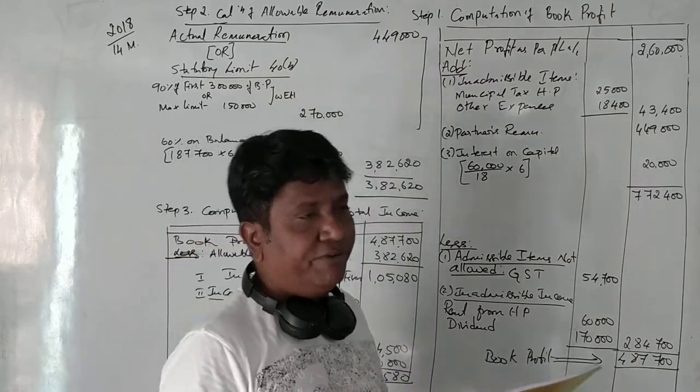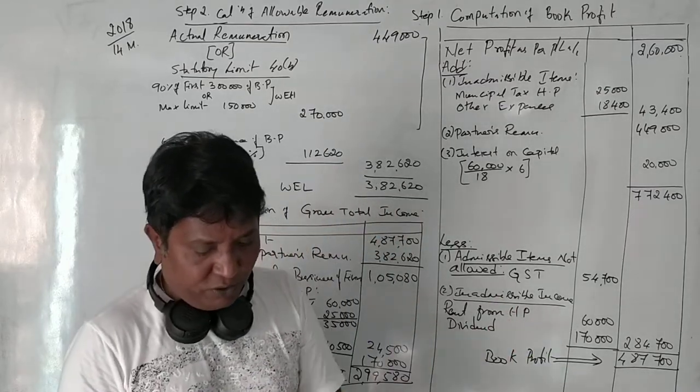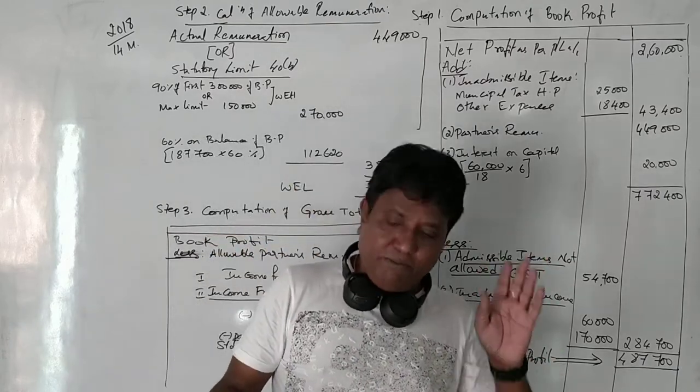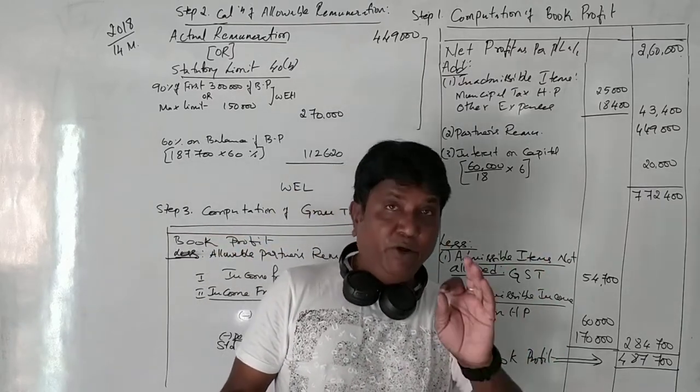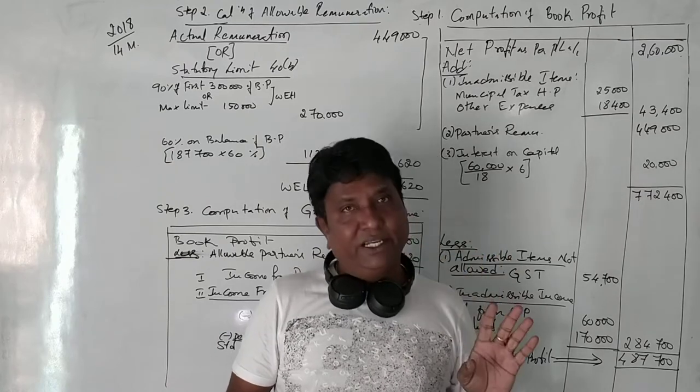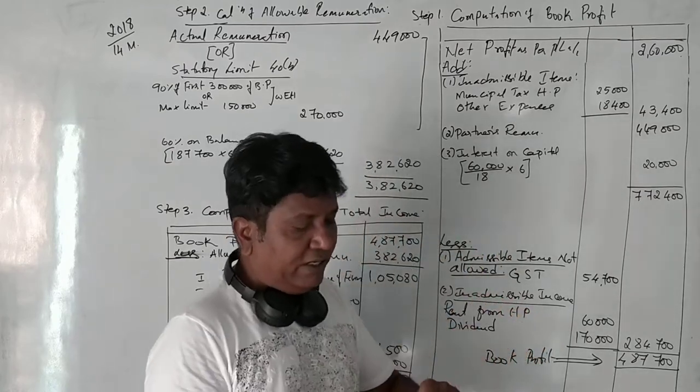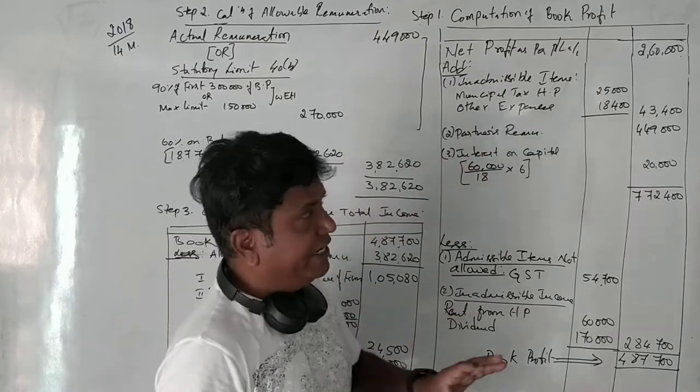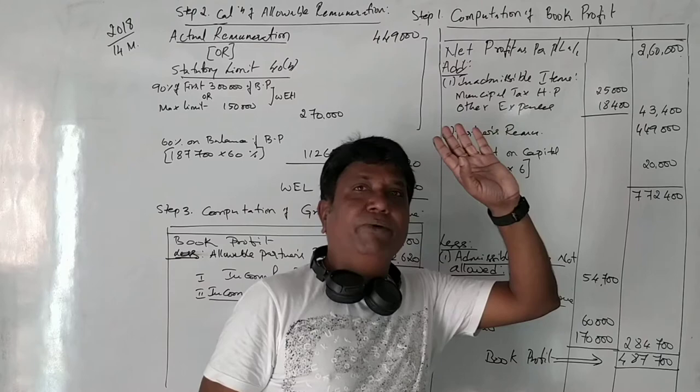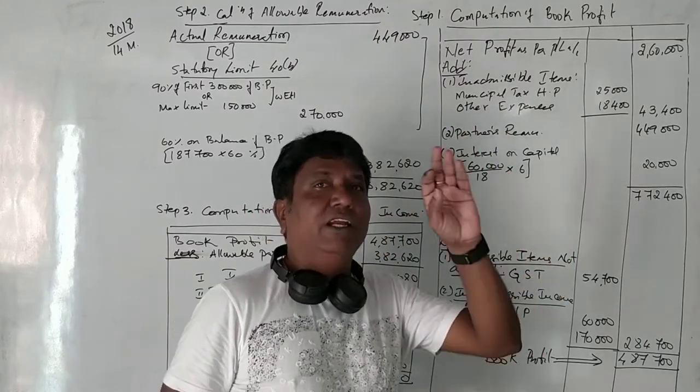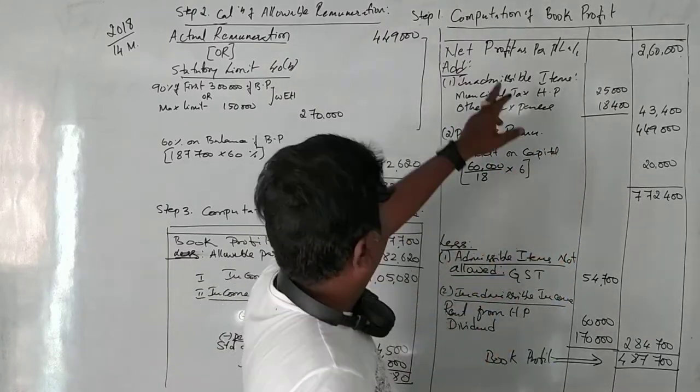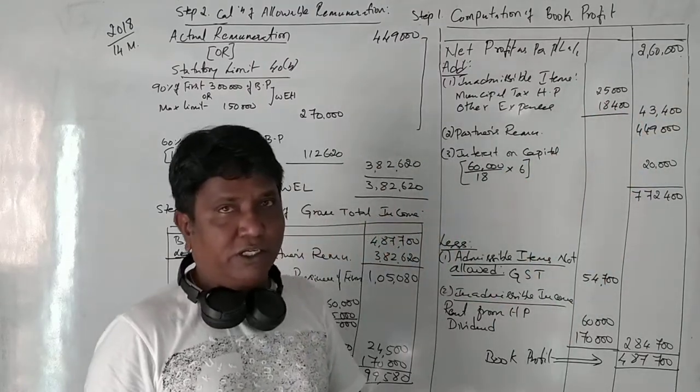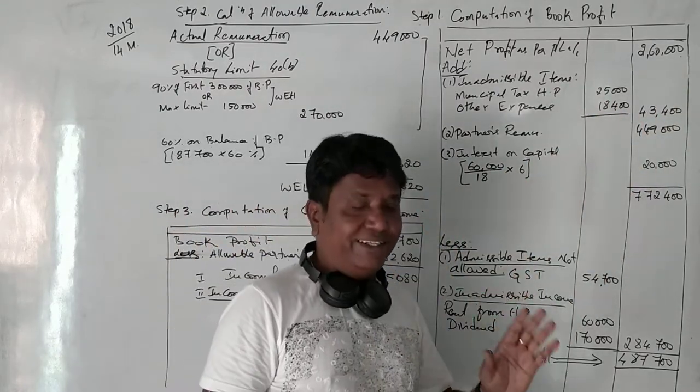For the year ending 31st March 2019 is as follows. Cost of goods sold, as you know that it is a business expense. Remuneration to partners is 4,49,000. Before that, net profit is showing 2,60,000. Whenever we have a net profit, the first step is calculation or computation of book profit. In computing the book profit, first we should take net profit as the profit and loss account is showing 2,60,000.